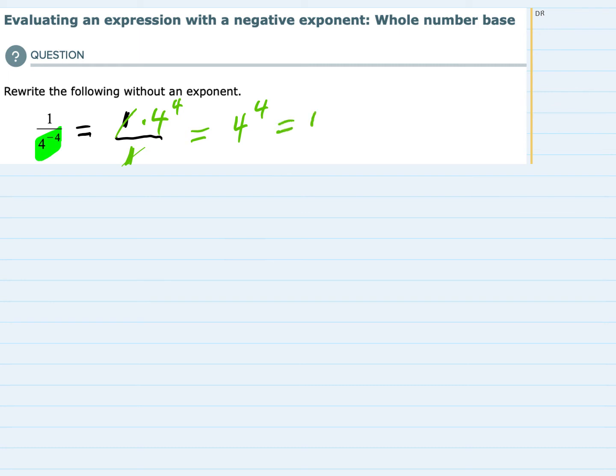Which would be 4 fours being multiplied, which is 16 times 4 times 4, 16 times 4 is 64 times 4, which is 256. So simplified, we have 256 as our solution.